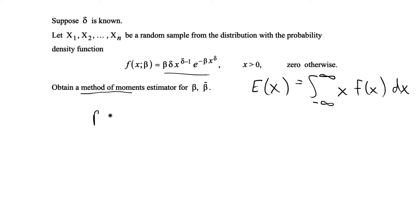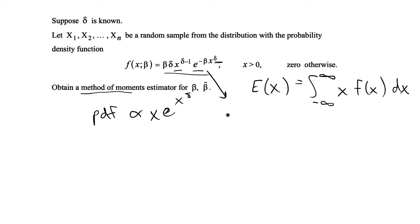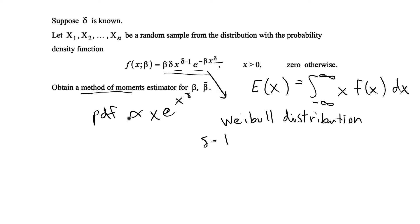For the PDF that we're given, I know that when we have a PDF proportional to x times e to the x, that's known as a gamma distribution, which has its own expected value. In this particular case we have something proportional to x times e to the x to the delta, so this PDF is actually a more generalized version of a gamma distribution — the Weibull distribution. If delta equals 1 you get a gamma distribution, but delta can be something other than 1, making it a more complicated function.